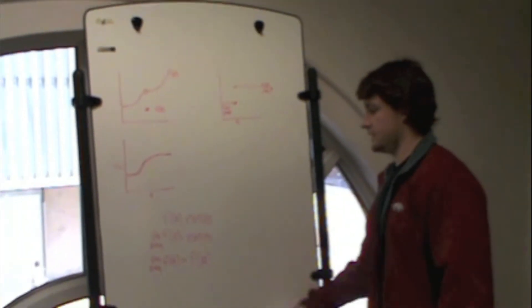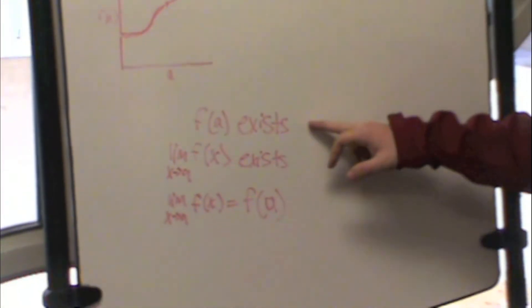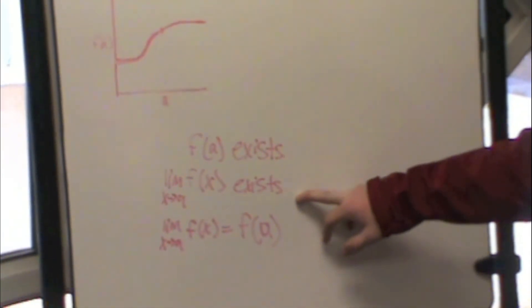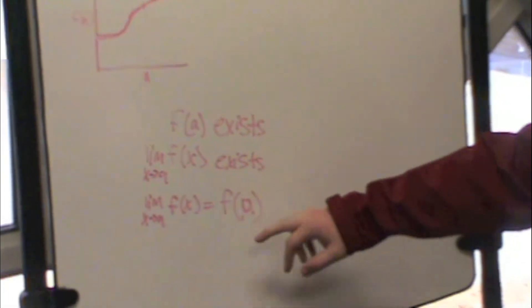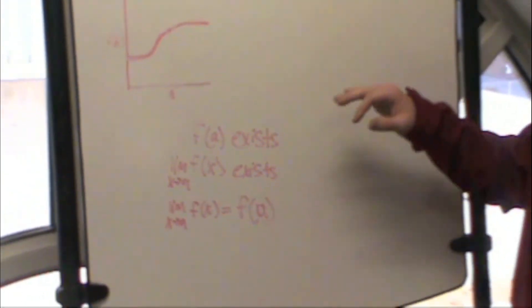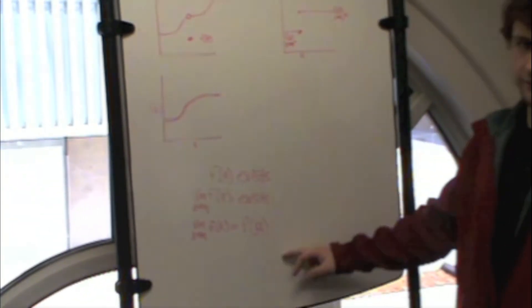Three rules that you have to remember: f of a exists, the limit of f of x as x approaches a exists, and the limit of f of x as x approaches a equals f of a. Basically, for it to be continuous, it has to match all three of these.